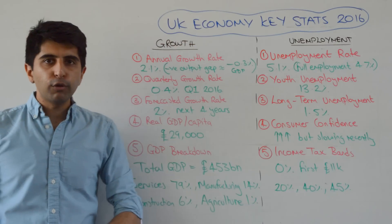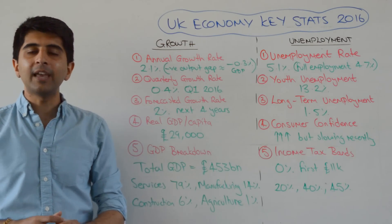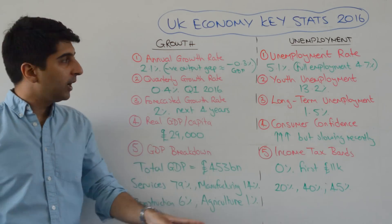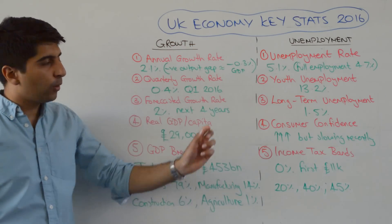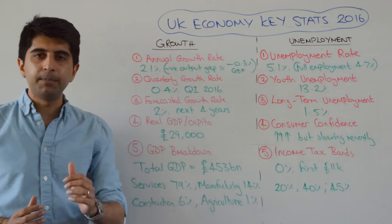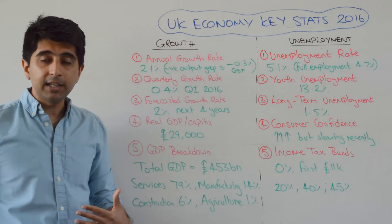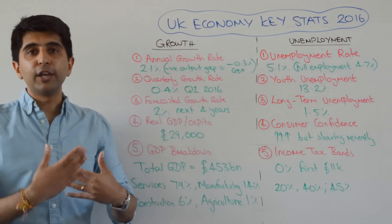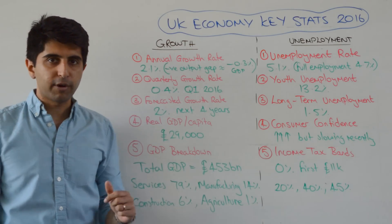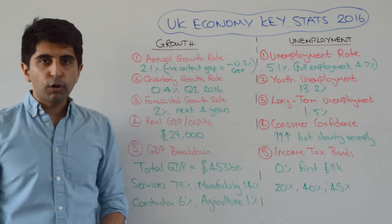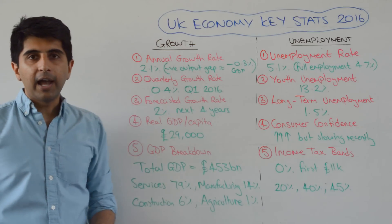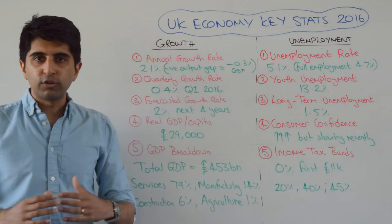The current annual growth rate in the UK is at 2.1%, but we still have a negative output gap. The Bank of England quotes it to be around minus 0.3% of GDP, implying there is still some slack in the economy. The economy can grow without much demand-pull inflationary pressure right now. The quarterly growth rate is at 0.4%, quoting the first quarter of this year.